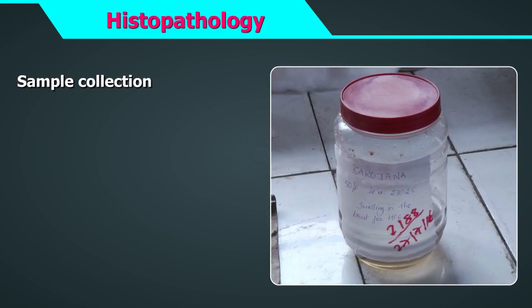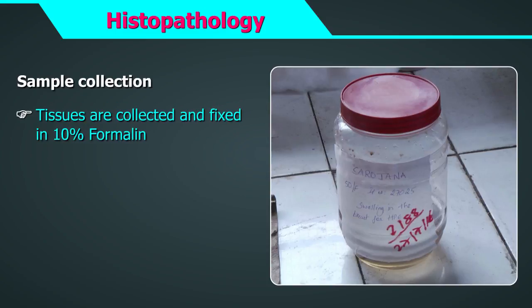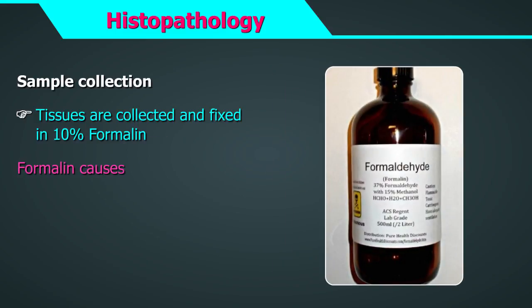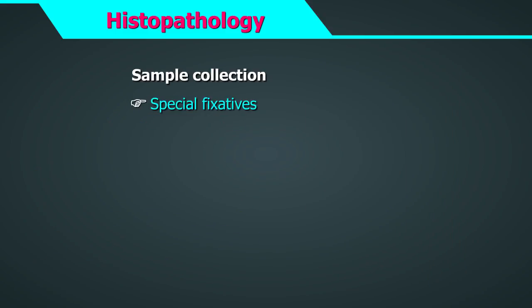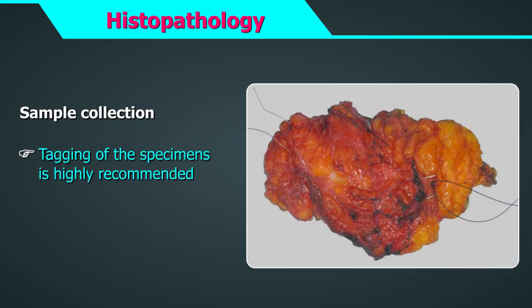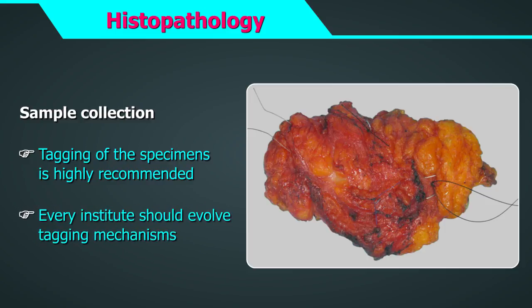Tissues are collected and fixed in 10% formalin. Formalin slowly penetrates the tissue, causing chemical and physical changes that harden and preserve the tissue and protect it from degeneration. Few tissues require special fixatives. For example, testicular biopsies fix better in Bowen's solution. Tagging of specimens is highly recommended for easy orientation of the tissue. Every institute should evolve tagging mechanisms of communication between surgery and pathology staff.